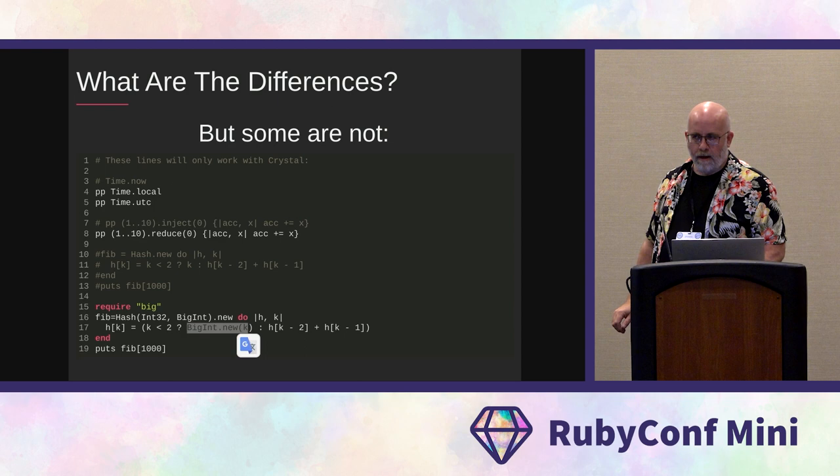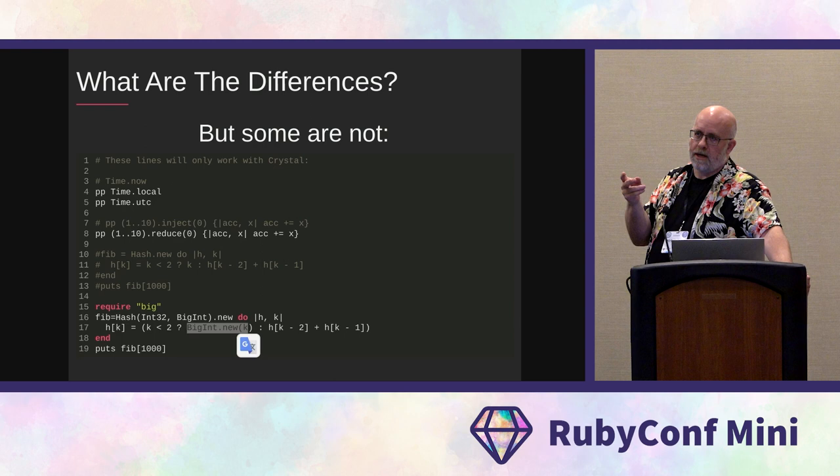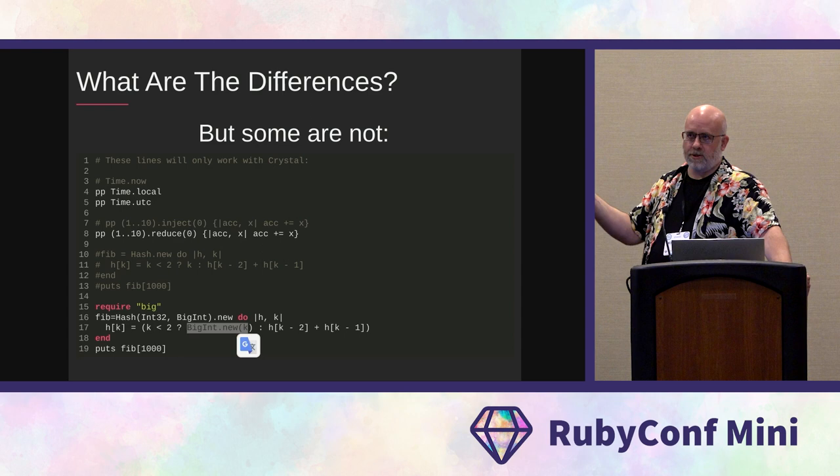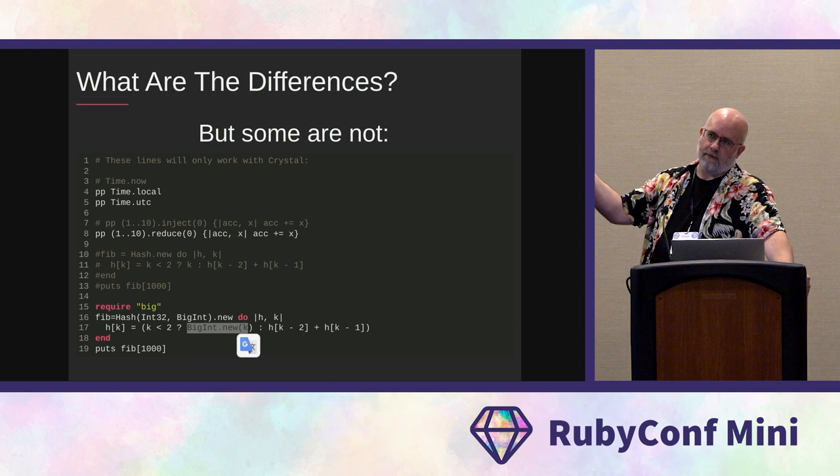What happens on arithmetic overflow in Crystal? It depends on the math operators you use. For all math operators there are two variations: one of them will throw an error and the other one will wrap. So if you have a use case for just wrapping the value back around, there's an operator that will do that.